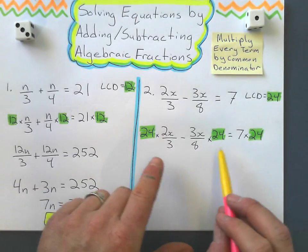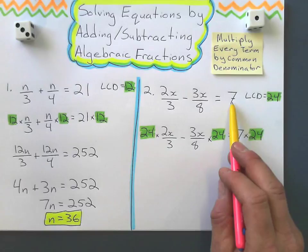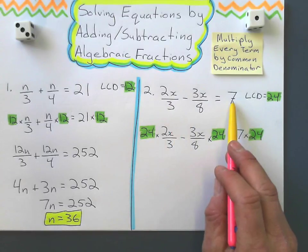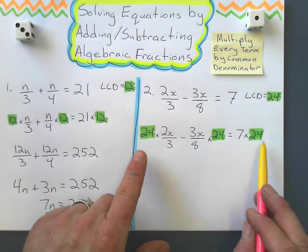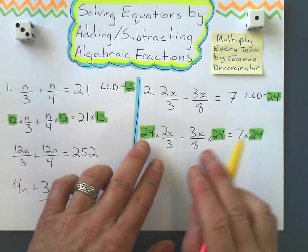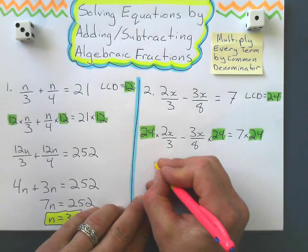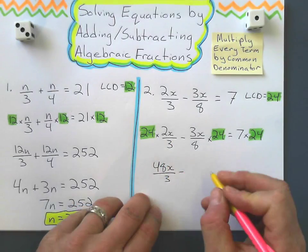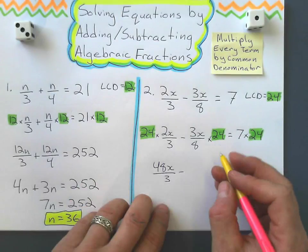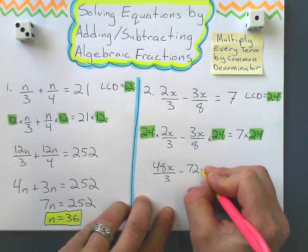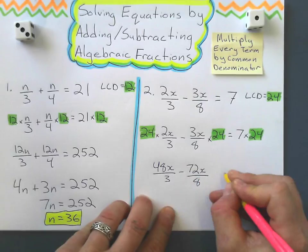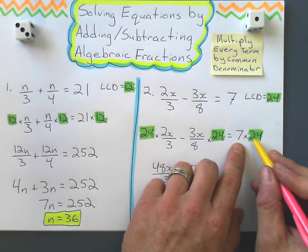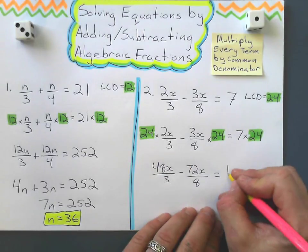Okay, and what we can't forget is to multiply this guy by 24 as well. We multiply every single term by that least common denominator, and that way we keep it equal, we keep it true. So 24 times 2x is 48x over 3 minus, 3 times 24 gives me 72 with an x over 8 equals, and 7 times 24, and this is the one where most people forget, that gives me 168.